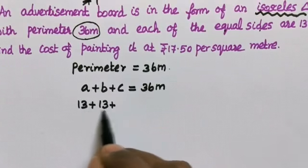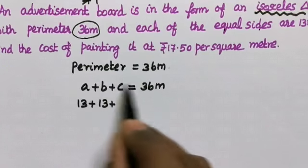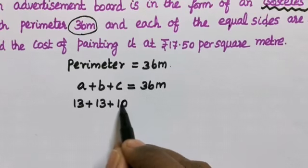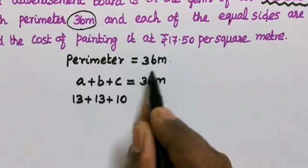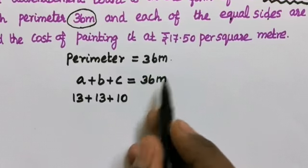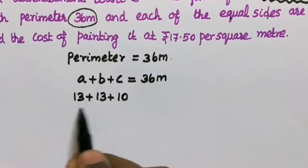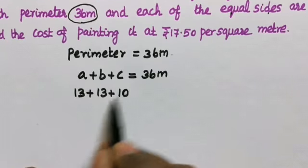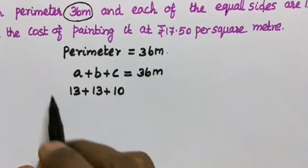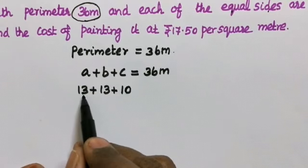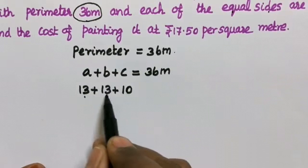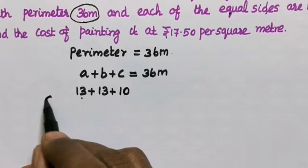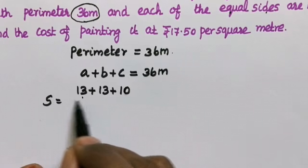So we have 13 and 13. The third side value we need to find — because the total is 36. Adding 10 gives us 36. So the values: a plus b plus c equals 36. Now we can calculate s.